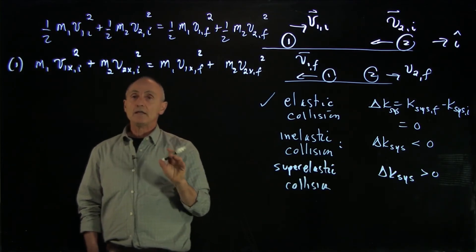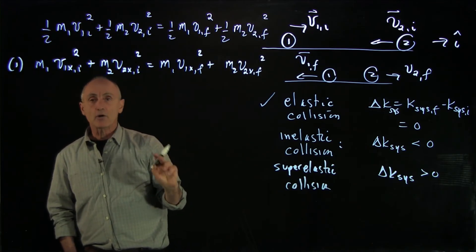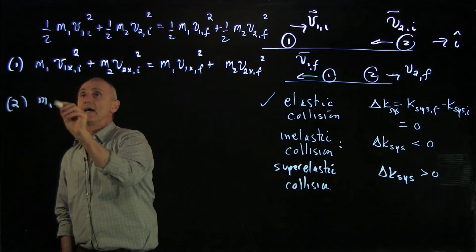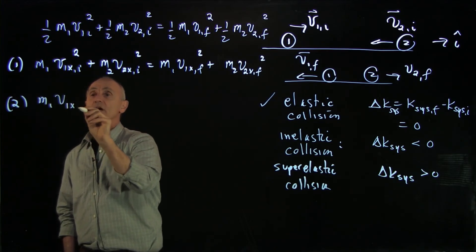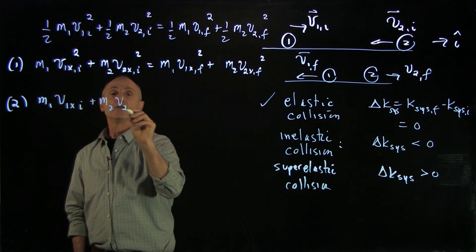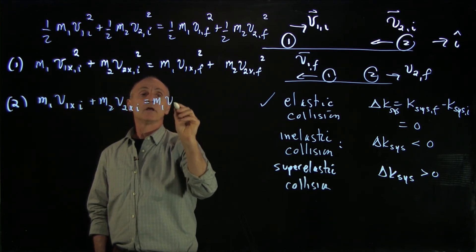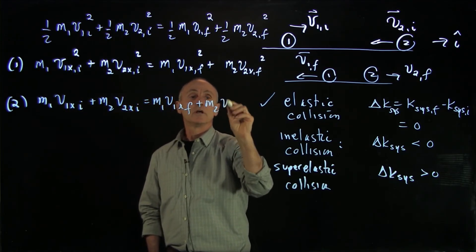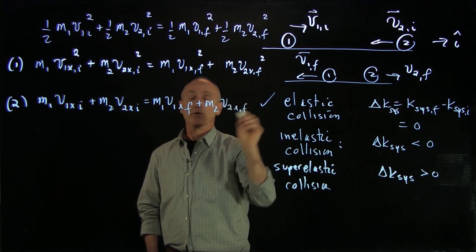We also have our momentum equation, which I'll write down as m₁v₁ₓ initial plus m₂v₂ₓ initial equals m₁v₁ₓ final plus m₂v₂ₓ final, reminding us of our condition of the constancy of momentum.